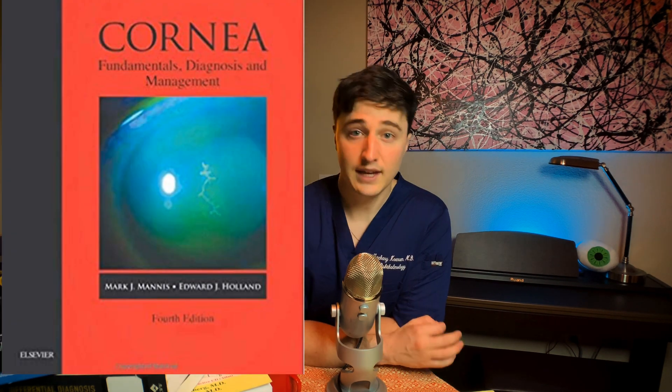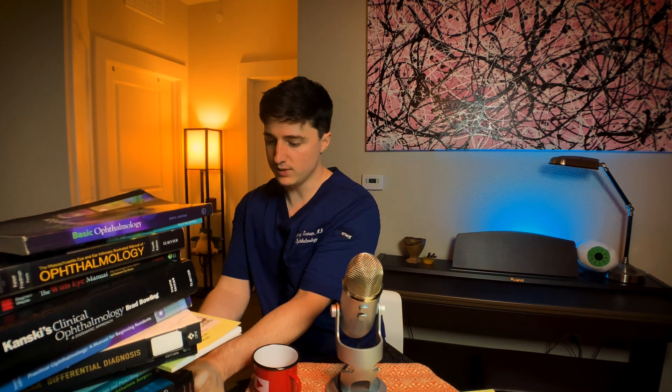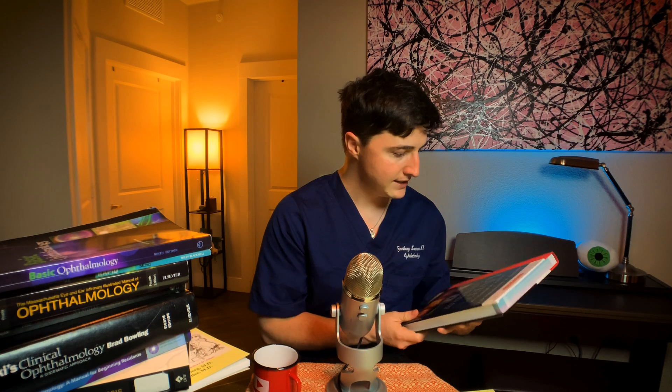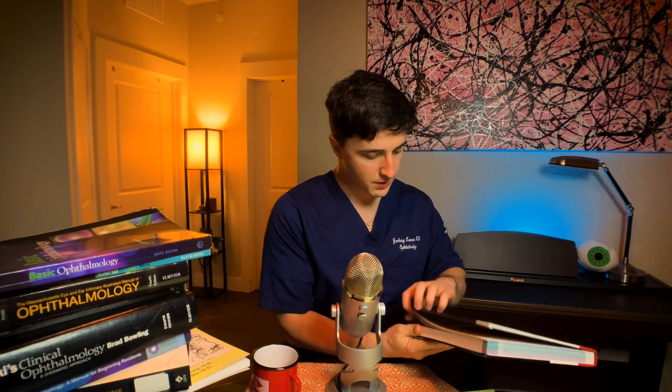For the cornea section, the advanced text is simply called Cornea, by Mark Maness and Edward Holland — the fourth edition is the latest. It's a very large, dense text on cornea covering all different aspects of corneal disease, and probably one of the best detailed references I've come across for in-depth corneal disease. For uveitis, the book I have is titled Uveitis by Robert Nusenblatt and Scott Witkup — fundamentals in clinical practice. It's a pretty detailed, good book for uveitis, though there may be better options I haven't come across.